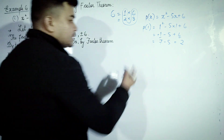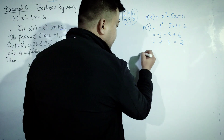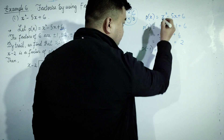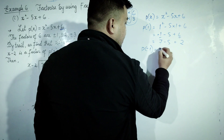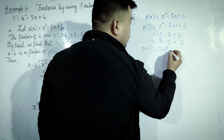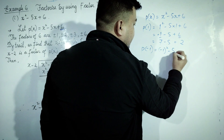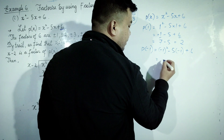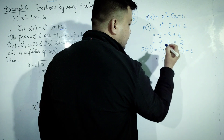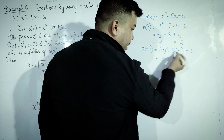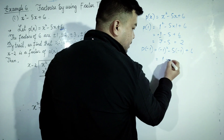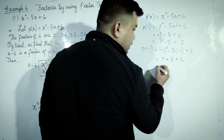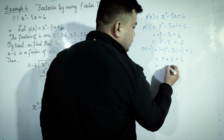Next, we have x = -1. So P(-1) = (-1)² - 5(-1) + 6 = 1 + 5 + 6. So we have P(-1) = 12.